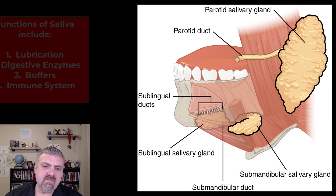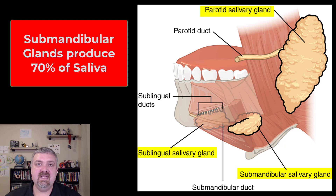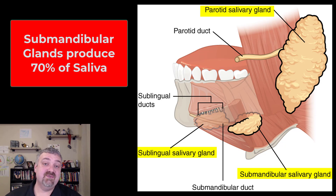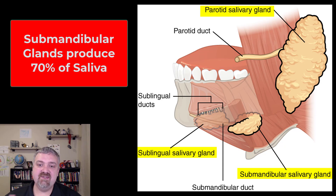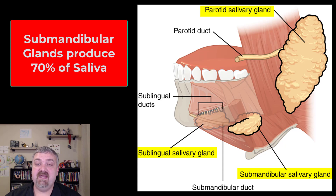Let's talk about the glands. From a size standpoint, the parotid salivary gland is the biggest, but it isn't the one that produces the most saliva. The parotid glands produce about 25% of your saliva, the submandibular salivary glands produce 70%, and the sublingual salivary glands produce 5%. So even though the parotid gland is the largest, it does not produce the most secretions. The parotid gland is the most watery and also has the most salivary amylase — it's pretty much a pure serous, watery gland.